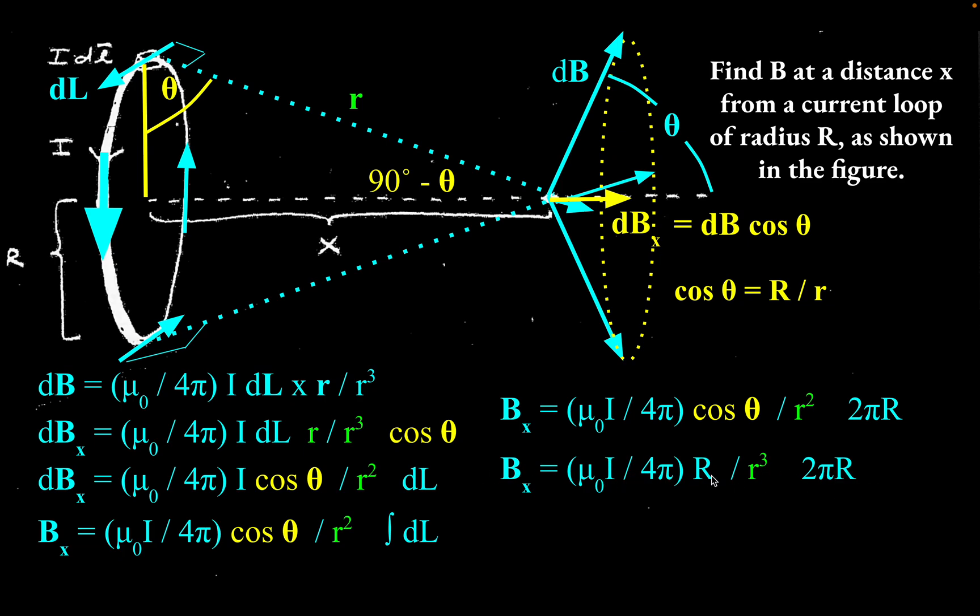Now the only thing here that makes us like not quite done is this little r, again, is not one of the things that was given. But we can use the Pythagorean theorem to relate it to the other sides of the triangle defined here. So little r can be written as the square root of the sum of the squares. So you get square root of x squared plus big R squared.